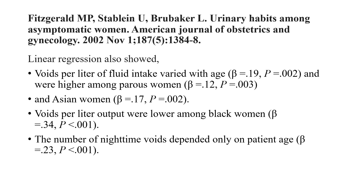Generally, women will void between 4 to 6 times during the day, especially when younger, and it is only after 50 to 60 years of age that they will get up at nighttime to void. This is assuming a normal fluid intake of 2 to 3 liters per day, of which 60% will be passed as urine with a small percentage lost in feces, and fluid also utilized during expiration and sweating.